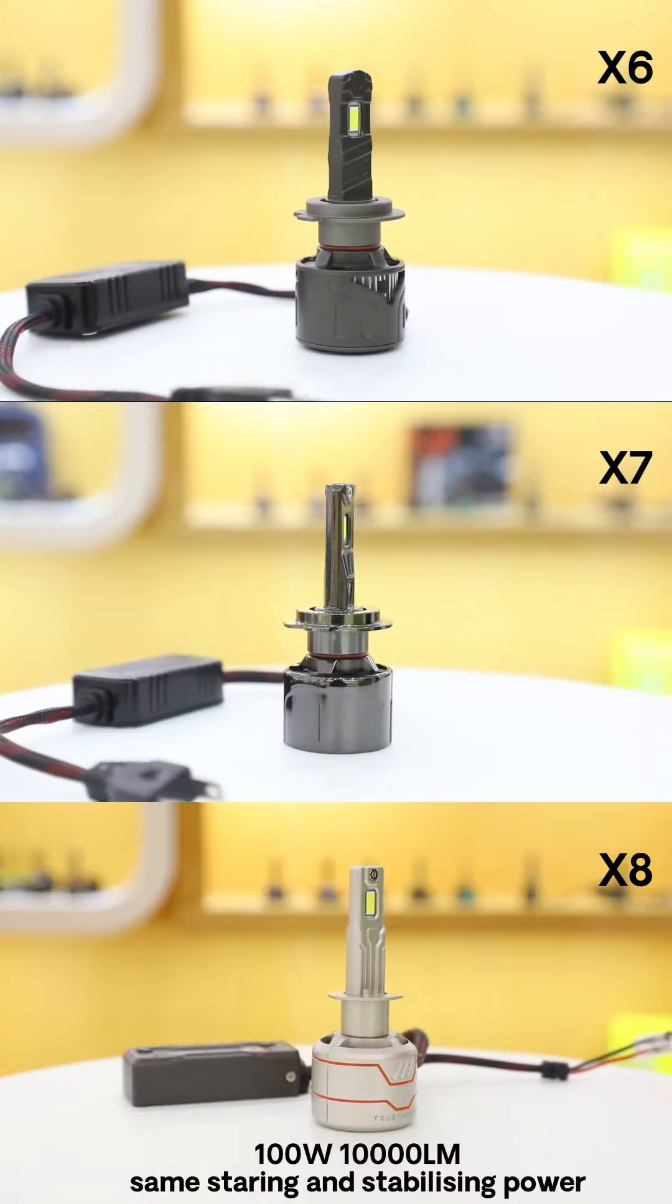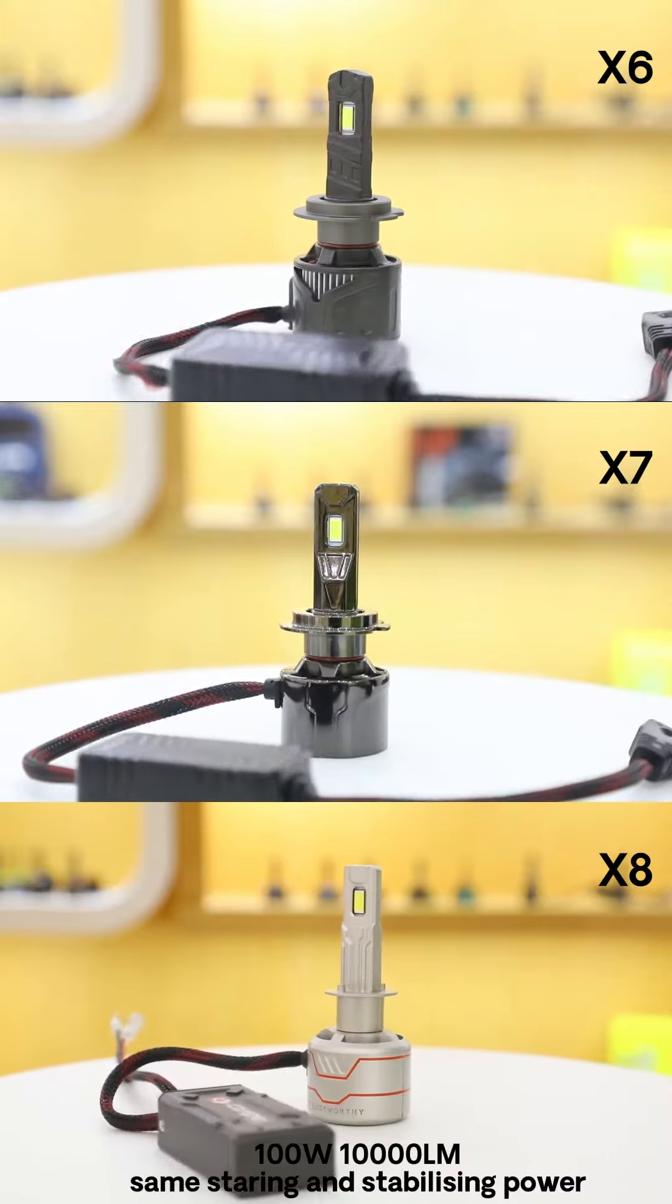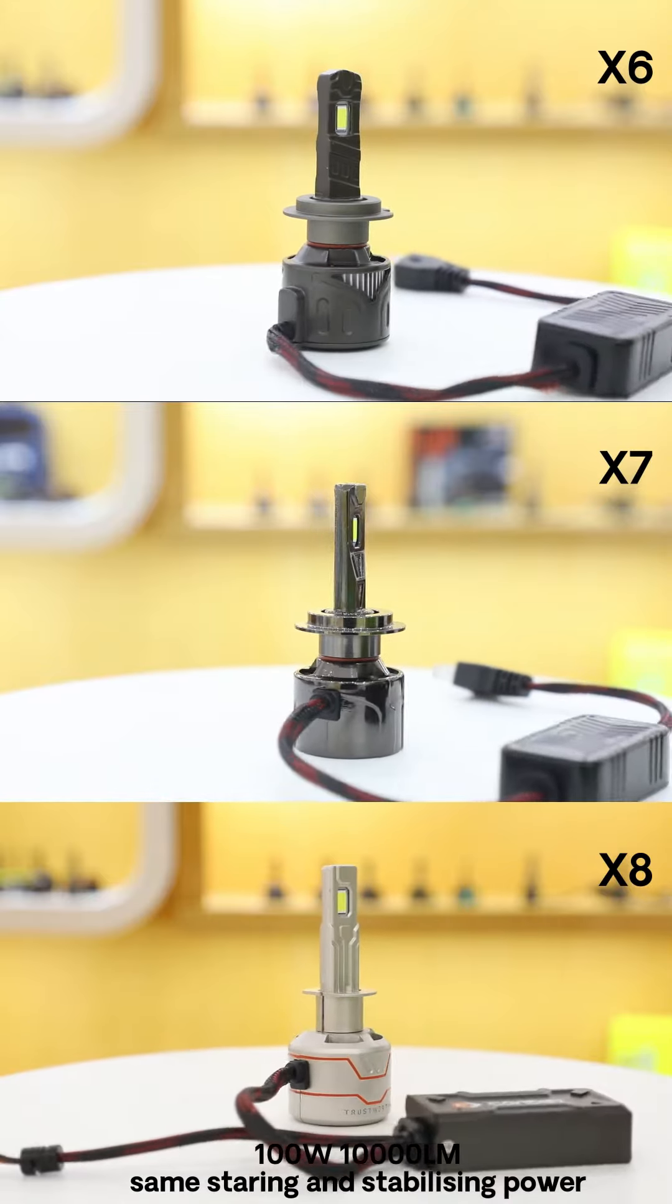They all belong to the high power series. 100W and 10,000 lumens have the same starting power and stabilizing power. All of them use CSP chips and have 6 LED chips on one side.